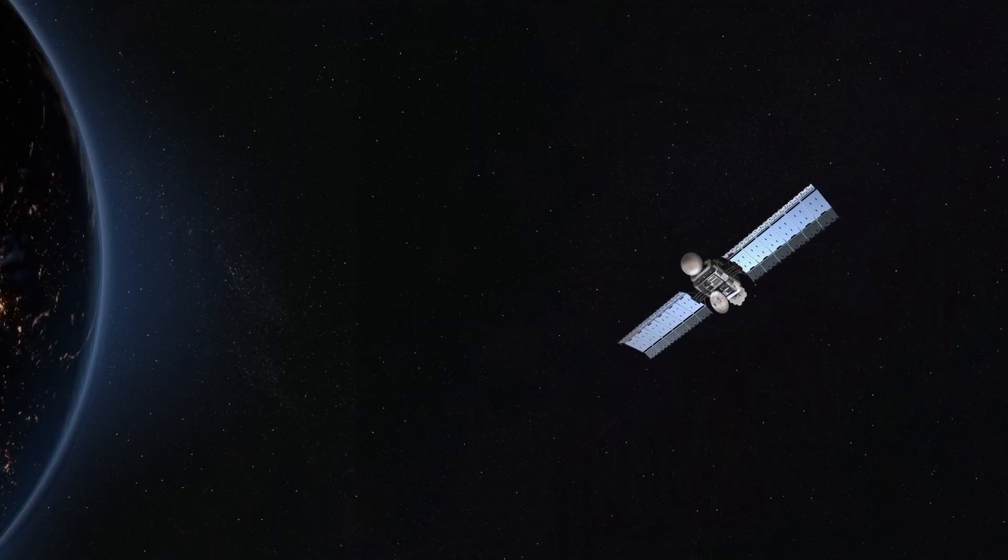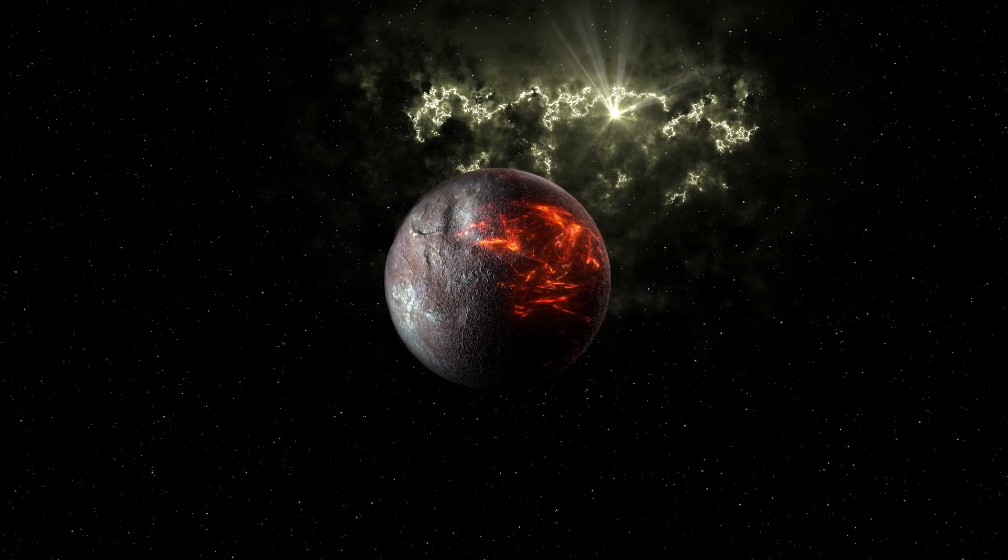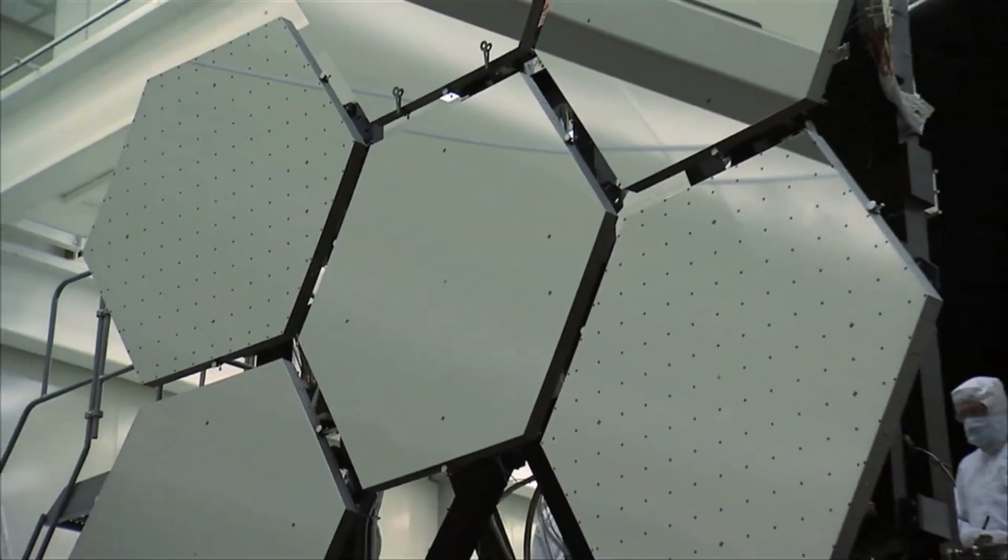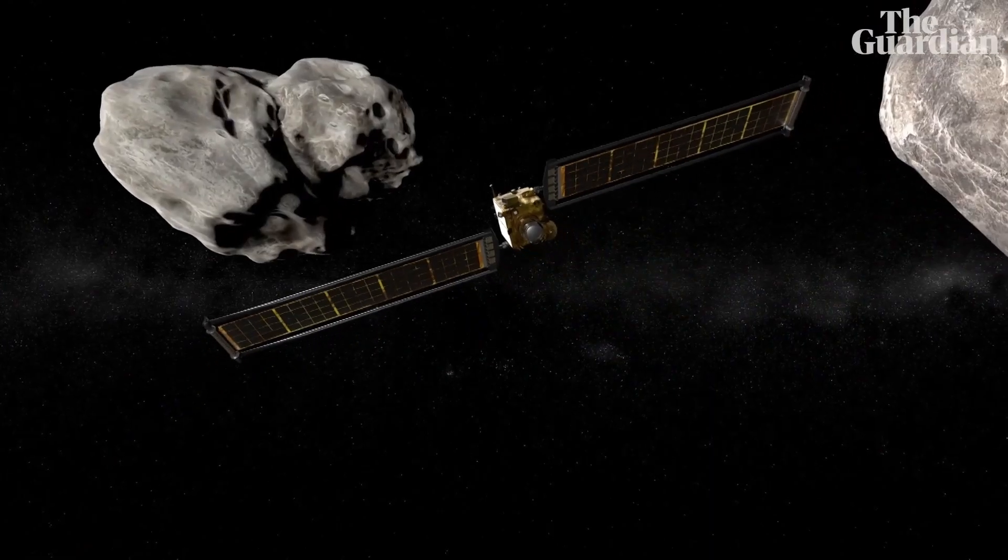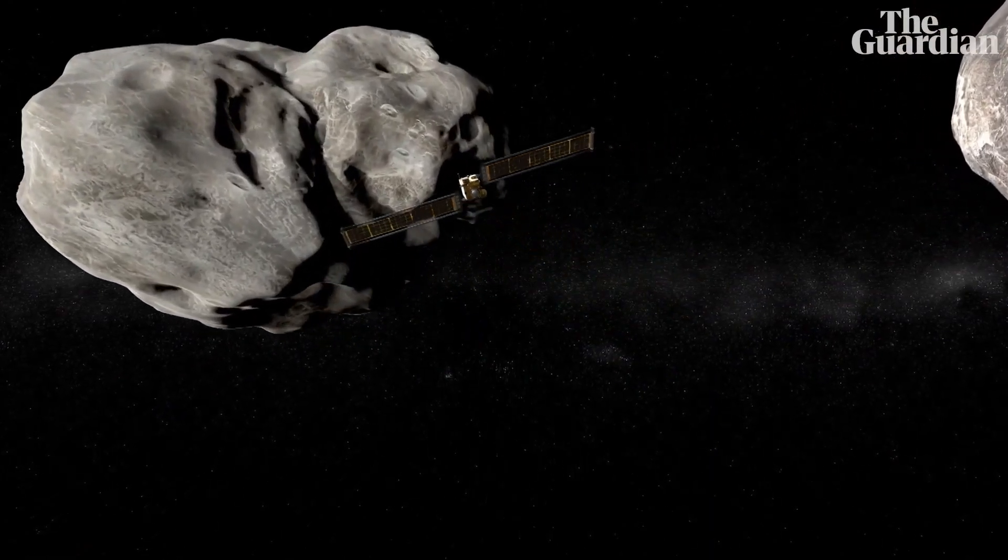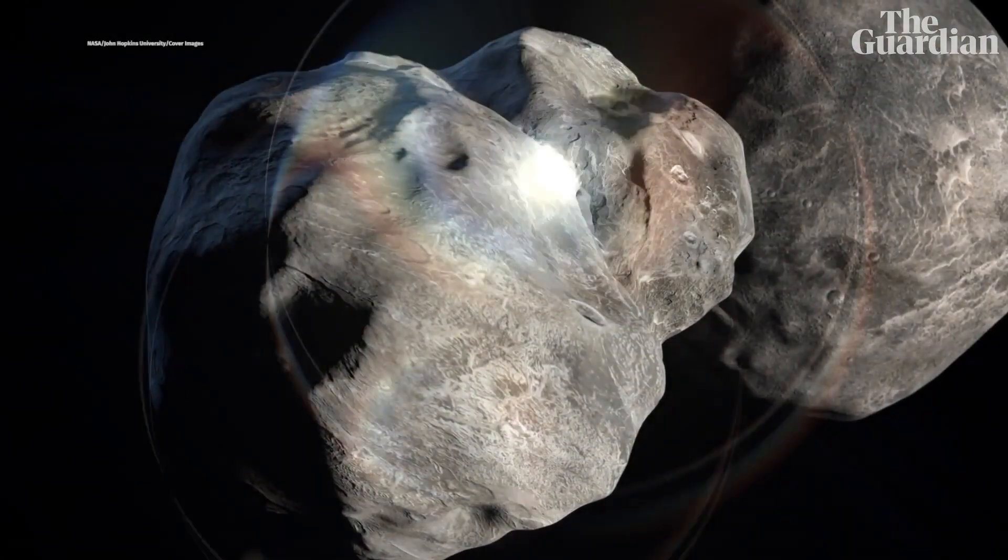Now let's talk about how NASA plans to deflect asteroids if they pose a threat. They're working on some ingenious technology, like the DART mission. DART stands for Double Asteroid Redirection Test. It's a spacecraft designed to crash into an asteroid to change its trajectory.